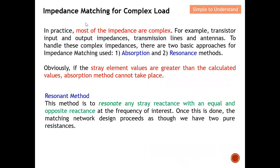Let's start with a quick definition of impedance matching. In practice, most impedances are complex — they are not simply 50 ohms or 100 ohms, but rather complex values like 50 plus j10. For example, transistor input and output impedances cannot be pure real terms; the impedances are complex. The same applies to transmission lines and antennas, and in order to handle this complex impedance...